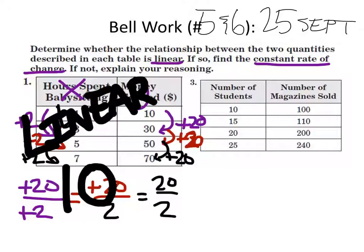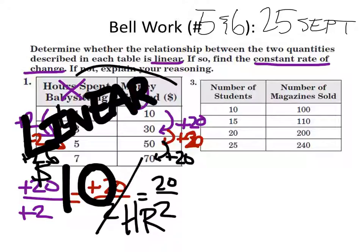Now, since this is the rate, we really should actually label this. And it would be the Y's over the X's. So, it's $10 per hour. Let's finish this.